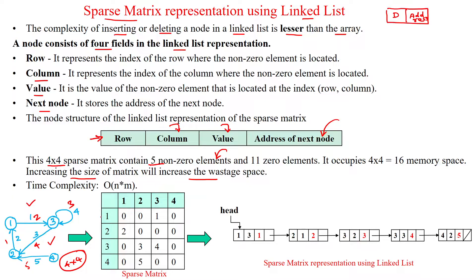When increasing the size of the matrix, there is the possibility of increasing wastage of space. To access elements in a given sparse matrix, we need O(n×m) time complexity. So the sparse matrix can be represented using the linked list.